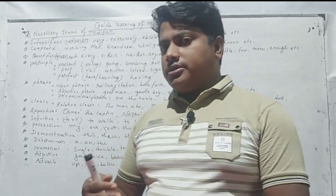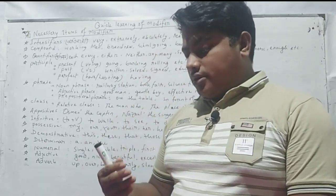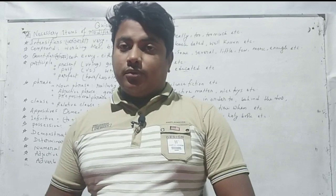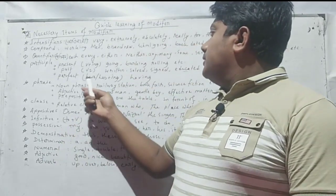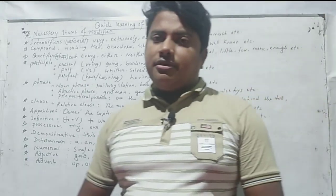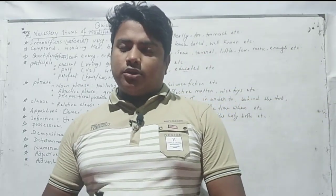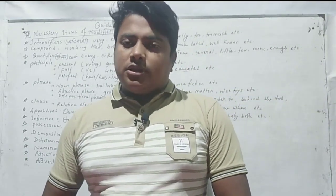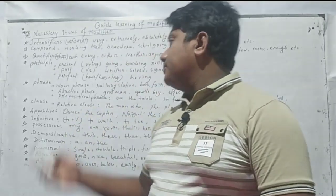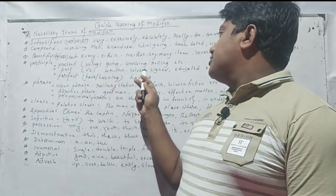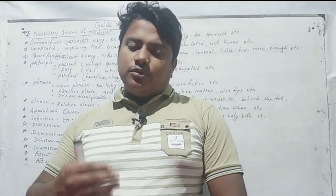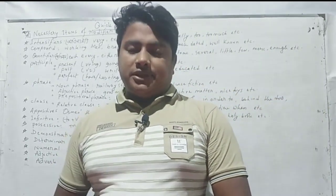For example, 'a rolling stone gathers no moss.' Here 'rolling' is a present participle. Past participle forms end in -d, -ed, or are irregular (V2/V3 forms). Examples: written, solved, signed, educated — as in 'an educated nation will be a developed nation.'